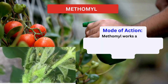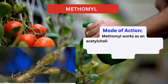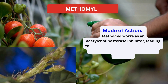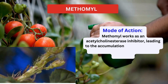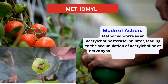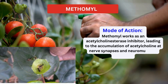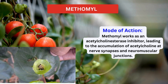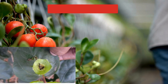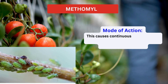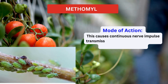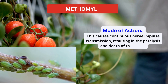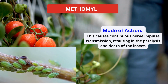Mode of action. Methomyl works as an acetylcholinesterase inhibitor, leading to the accumulation of acetylcholine at nerve synapses and neuromuscular junctions. This causes continuous nerve impulse transmission, resulting in the paralysis and death of the insect.